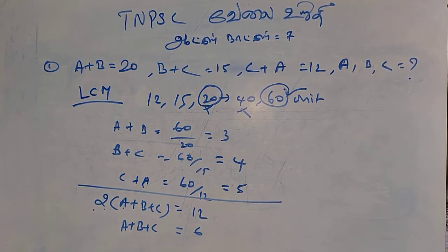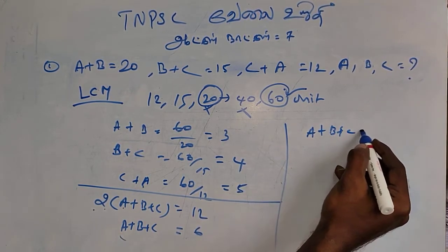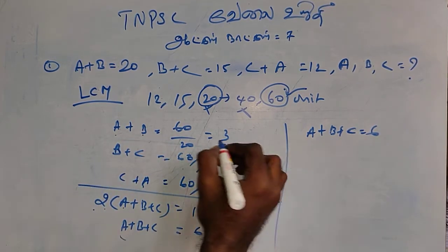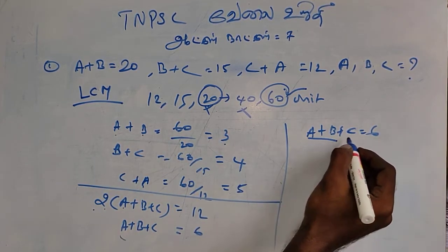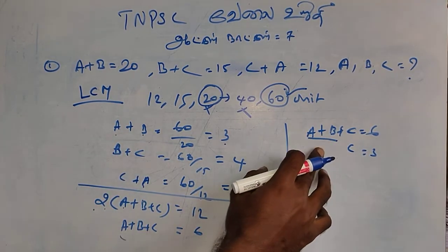So, a plus b plus c equals 6. So, a plus b equals 3. Which of a plus b equals 3 is 3. Then we substitute a plus b.